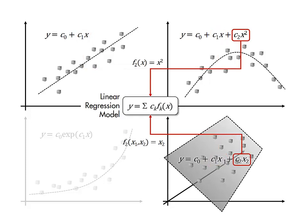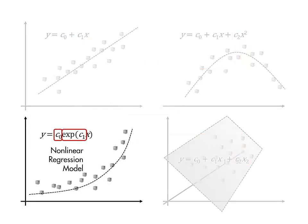Note that the functional dependence on the predictor variables can be linear or nonlinear. The key feature of a linear regression model is that the parameters of the model appear linearly. If the parameters appear in a nonlinear manner, then the regression model is nonlinear.